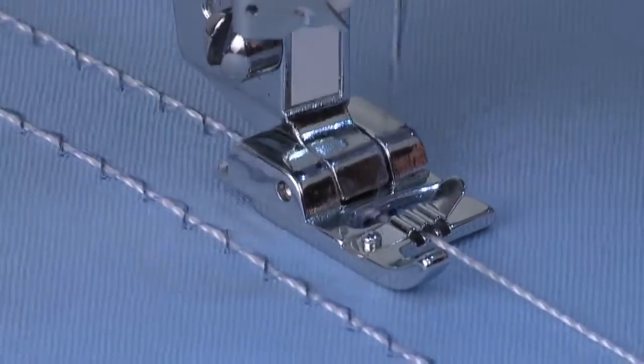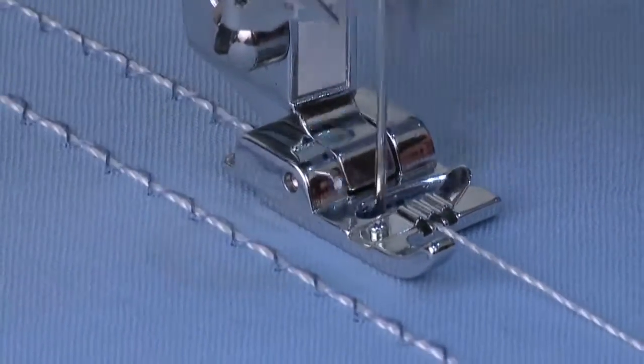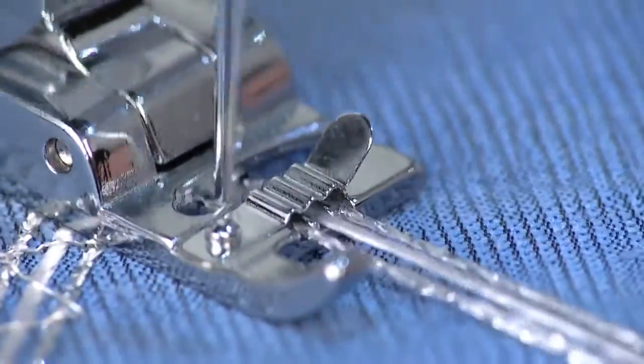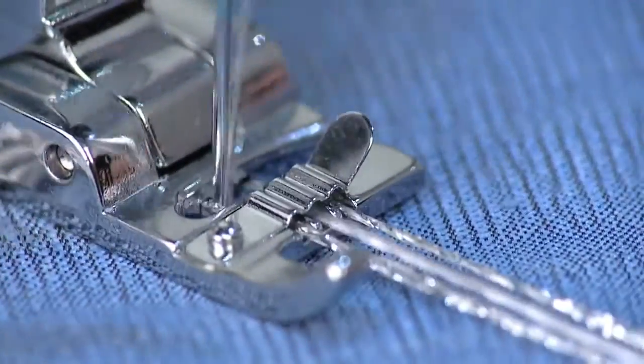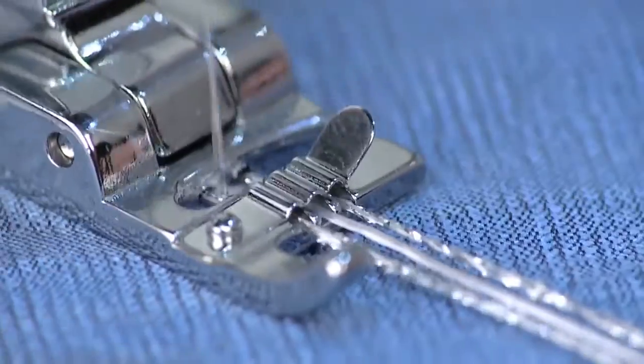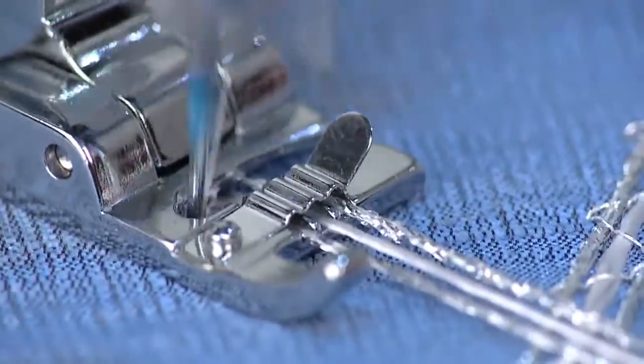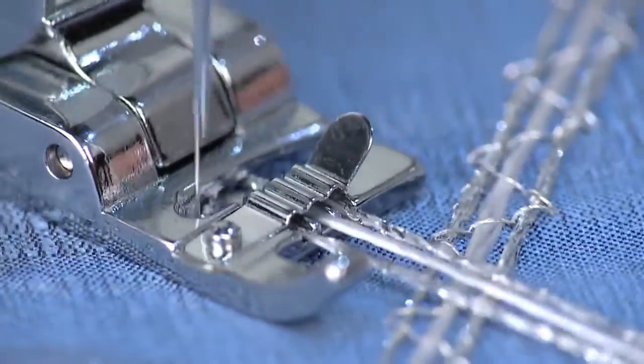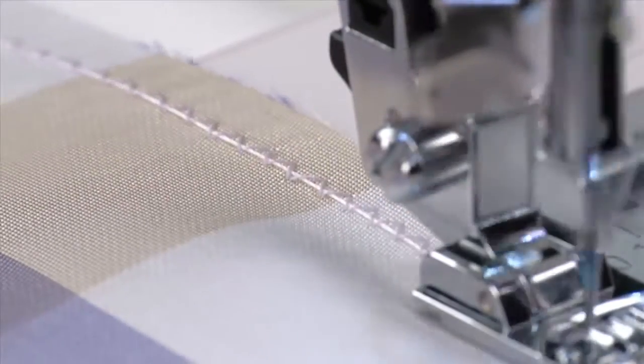The cording foot is mainly used to add surface embellishment to fabrics. Cords, thin braids or yarns are held by the foot while decorative stitching applies them to the fabric's surface. The cording foot can also be used for gathering.